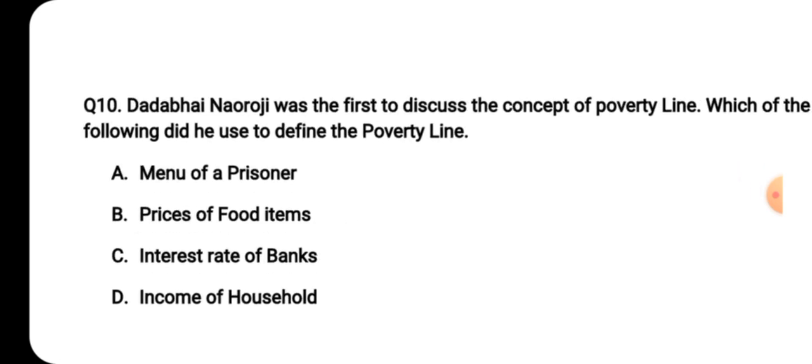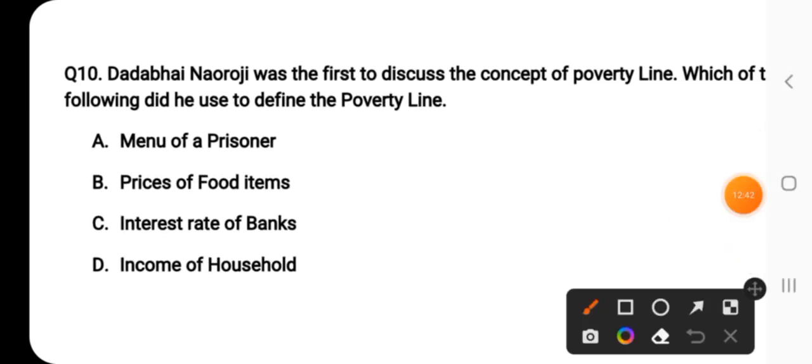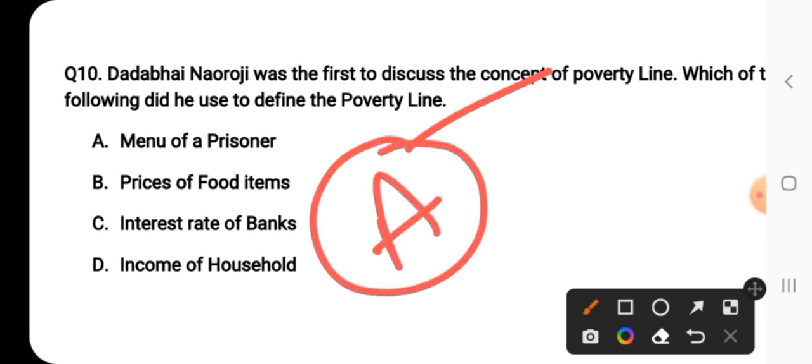Question number ten: Dadabhai Naoroji was the first to discuss the concept of poverty line in India. Which of the following did he use to define it? The correct answer is option B — menu of a prisoner. Dadabhai Naoroji basically said that if a household cannot eat even as much as a prisoner's minimum meal in jail, that person is poor. He used the calories eaten in jail as a benchmark to define the poverty line.